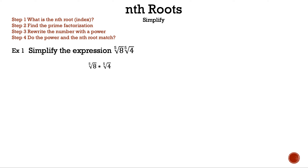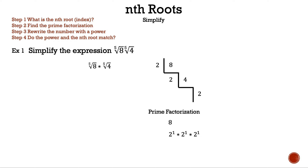Now let's find the prime factorization of eight and four. Starting with eight: since eight is even, let's divide eight by two, which is four, and four divided by two is two. Since two is a prime number, we can stop. The prime factorization of eight is two times two times two, and adding those exponents gives us two cubed.